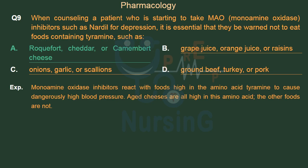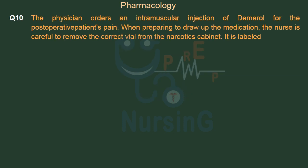Monoamine oxidase inhibitors react with foods high in the amino acid tyramine to cause dangerously high blood pressure. Aged cheeses are all high in this amino acid; the other foods are not.